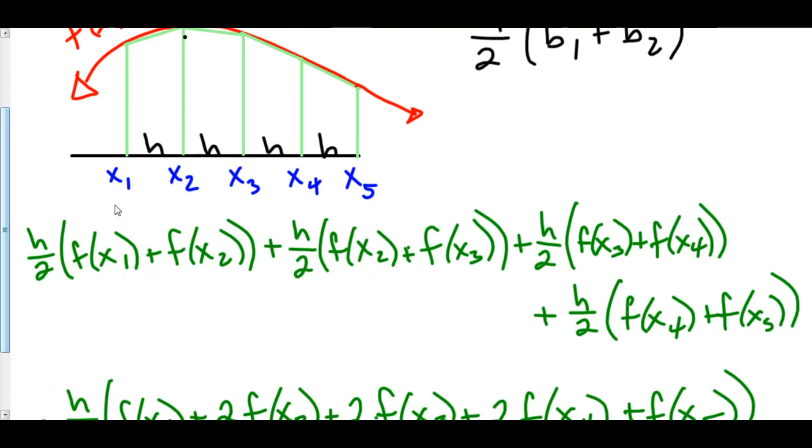The way to remember this is the outer lengths are alone, and all of the interior lengths are multiplied by 2.